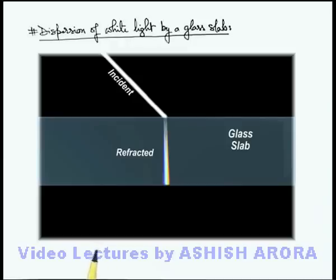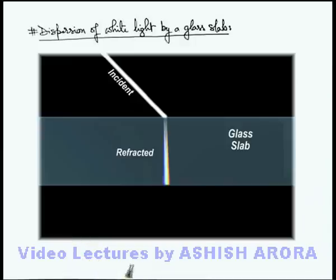Only the extreme edges of the refracted light will appear slightly violetish or reddish on the edges, due to the light rays at the edges of the beam.